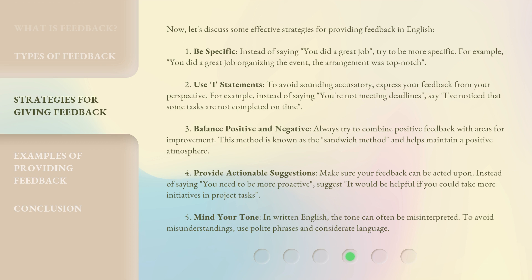3. Balance positive and negative. Always try to combine positive feedback with areas for improvement. This method is known as the sandwich method and helps maintain a positive atmosphere. 4. Provide actionable suggestions. Make sure your feedback can be acted upon. Instead of saying 'You need to be more proactive,' suggest 'It would be helpful if you could take more initiatives in project tasks.' 5. Mind your tone. In written English, the tone can often be misinterpreted. To avoid misunderstandings, use polite phrases and considerate language.